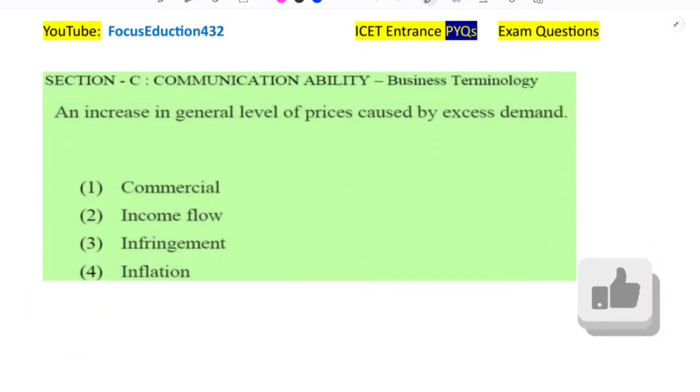Next question in business terminology. An increase in general level of prices caused by excess demand. What is this known as? An increase in the level of prices. Every year, the prices of oil or sugar or rice or something like this will increase. That is what is known as inflation. Increase in the level of prices due to demand or as the time goes on, that is what we can say as inflation in business terminology.